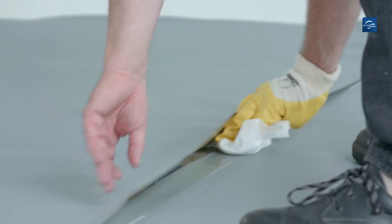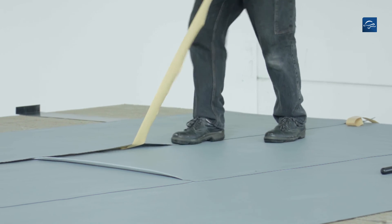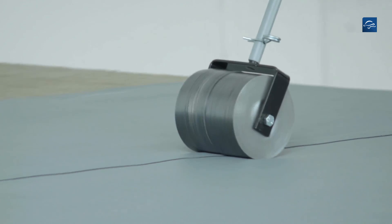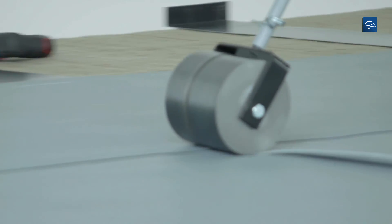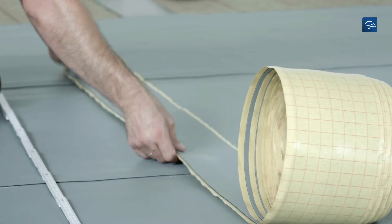Clean the seam areas using Repanol solvent welding agent. Remove the release paper from the self-sealing edge. Press down the edge and then finally seal it using the universal roller.